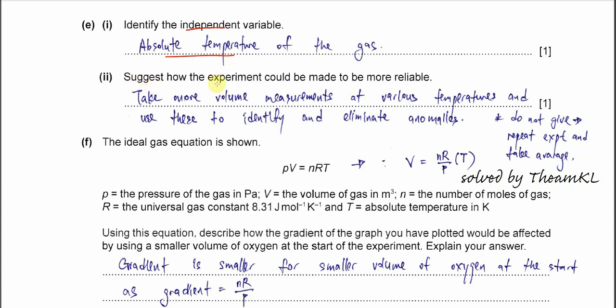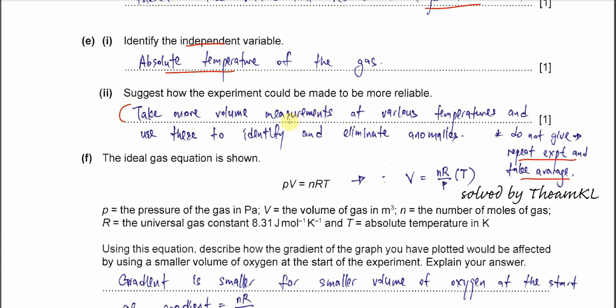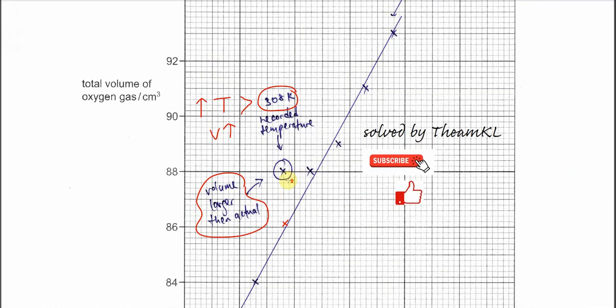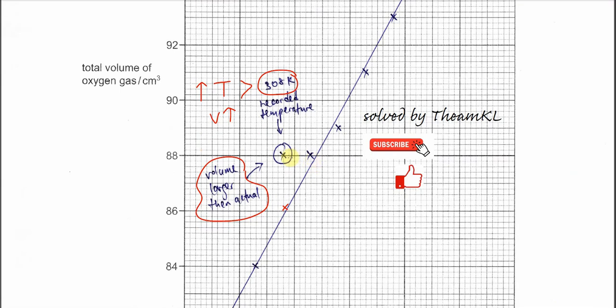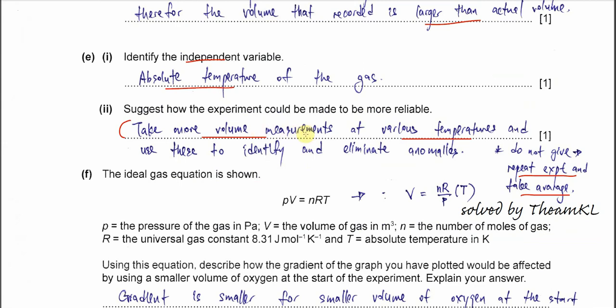Part E(ii): Suggest how the experiment could be made more reliable—so the result is more accurate. Please do not give 'repeat experiment and take average,' because it's meaningless to take an average. To make it more reliable, take more volume measurements. Use more temperatures like 75, 80°C, and others. We use more volume measurements from various temperatures. Therefore, in the graph we can get more plots and we can get a better best fit and remove more abnormalities. That's why we should take more volume measurements, not take averages.